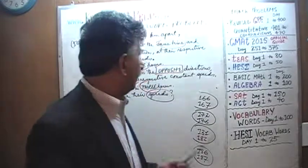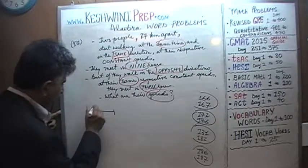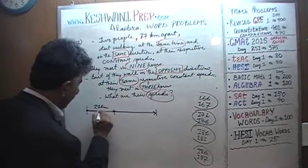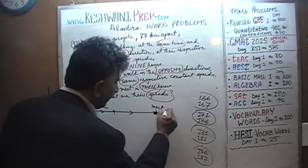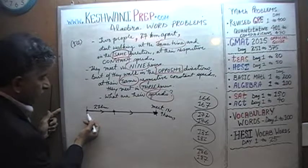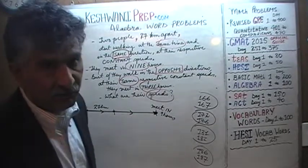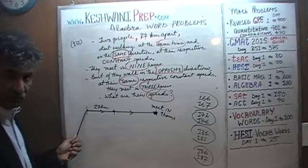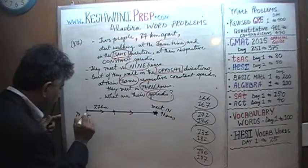The very first thing we know is that they are 27 kilometers apart. Let's give these people names. This distance here is 27 kilometers — one person standing here, the other there. They start walking in the same direction and eventually they meet here in nine hours. The guy who is 27 kilometers behind obviously has to go at a faster speed. I'm going to call him Mr. F because he goes faster.